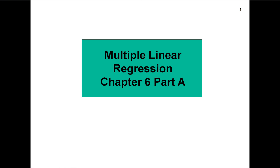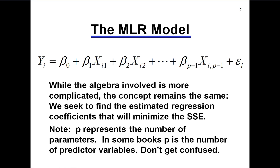We have already taken a look at the simple linear regression model using matrix operations, and today's presentation is simply an extension of that. In the model we're going to discuss, we have p minus 1 regressor variables, or equivalently p parameters, beta 0 through beta p minus 1. It's important to understand that here p represents the number of parameters. In some textbooks and articles, p is used to represent the number of predictor variables. In our particular model, we have p parameters and p minus 1 predictor variables.